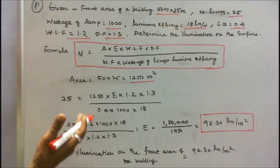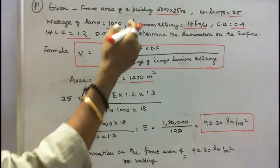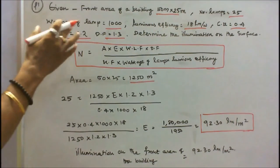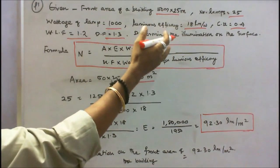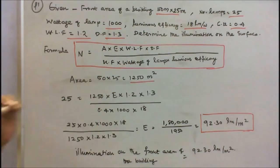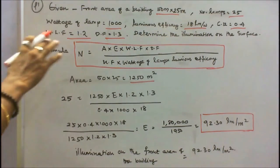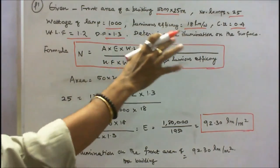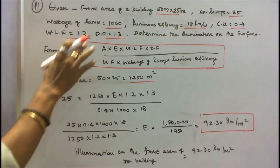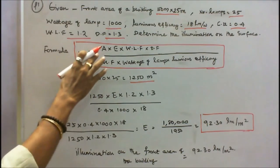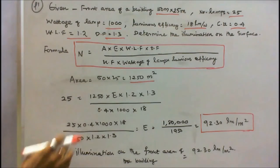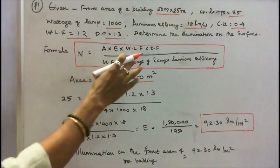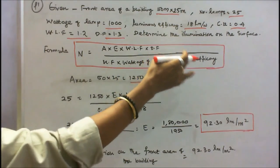Given values: Front area of the building = 50 m × 25 m. Number of lamps = 25. Wattage of each lamp = 1000 watts. Luminous efficacy of lamp = 80 lumens per watt. Coefficient of utilization = 0.4. Waste light factor = 1.2. Depreciation factor = 1.3. We have to find the illumination on the surface using the formula: N = [A × E × WLF × Depreciation Factor] / [Utilization Factor × Wattage of lamp × Luminous efficacy].